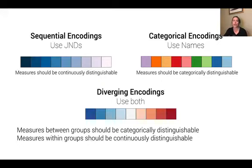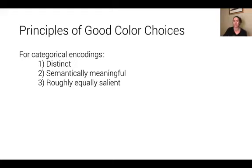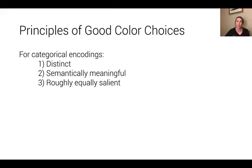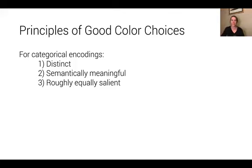Those are principles for sequential and diverging encodings when working with numeric data. But what about categorical data? Principles of good color choices for categorical encodings are a little different. We generally want our encodings to be distinct — able to tell all the different groups apart. If possible, we want those colors to be semantically meaningful, and we want our colors to be roughly equally salient so our eyes aren't immediately attracted to one set over another.